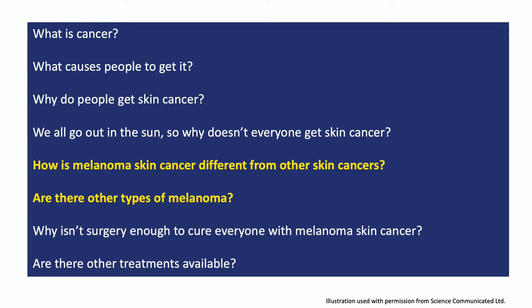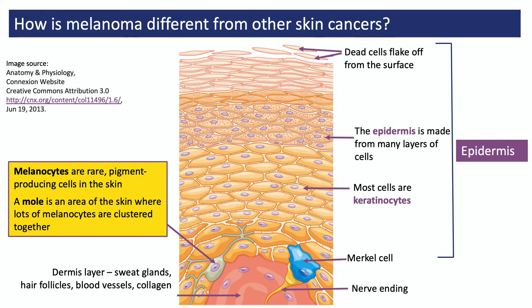I'm now going to look at a few less philosophical questions about melanoma — how it differs from other forms of skin cancer, and whether there are types of melanoma other than melanoma skin cancer. In this diagram, the top of the picture depicts the outer surface of the skin, with dead skin cells flaking off from the surface. As you look towards the bottom, you're looking at the deeper layers of skin cells, and right at the bottom you see a glimpse of the dermis layer, which lies beneath the epidermis. You can see that the epidermis is made of many layers of skin cells called keratinocytes. And right at the bottom of these layers, you see one lonely-looking melanocyte, a Merkel cell, and a nerve ending.